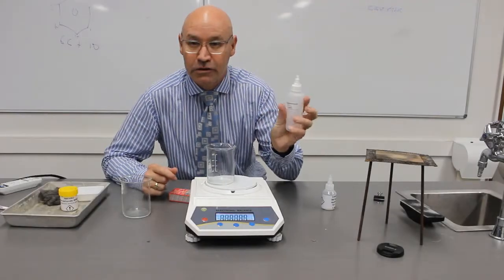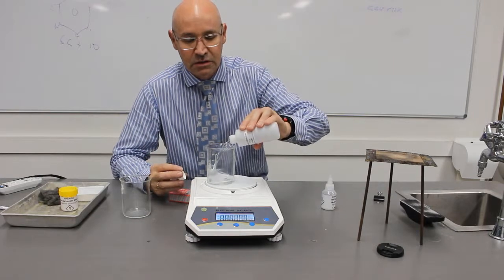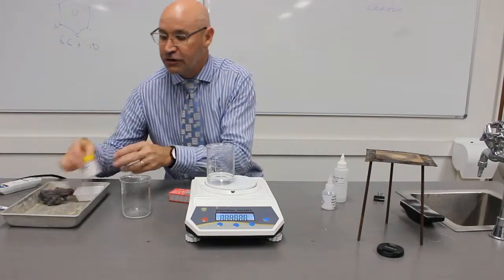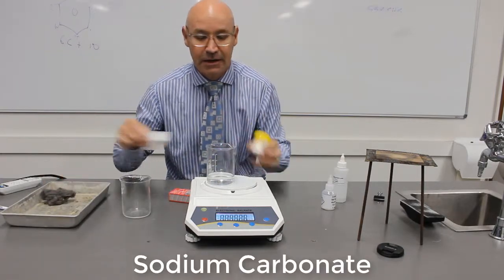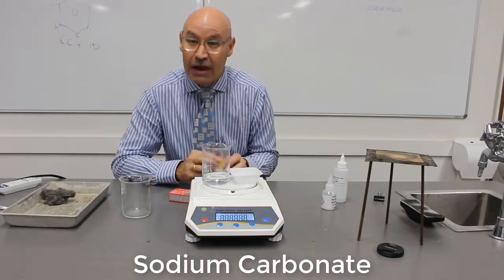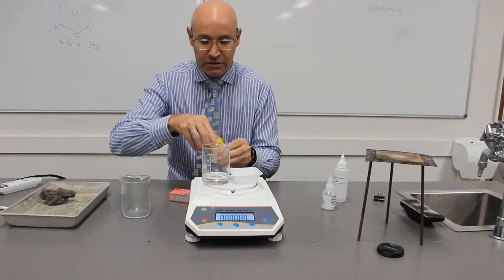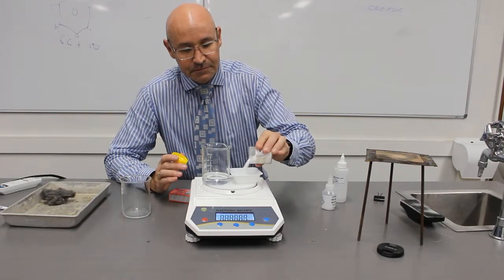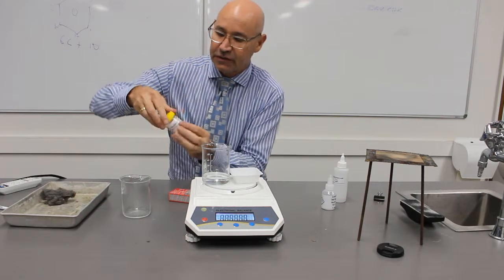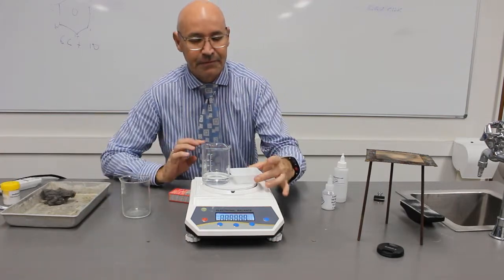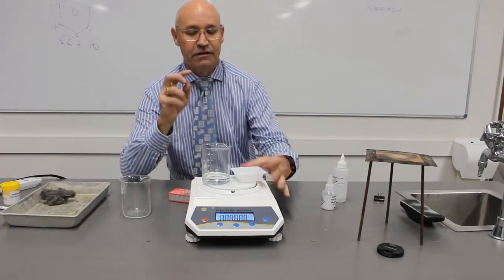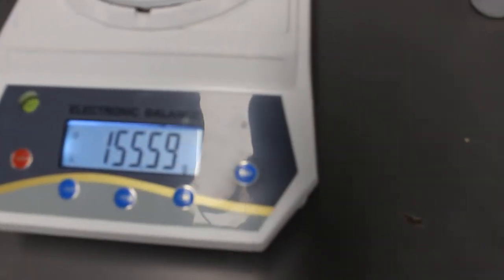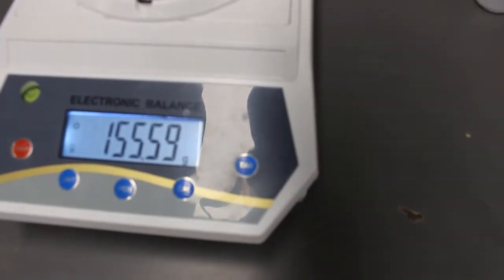In this next experiment, we're going to use hydrochloric acid again. And this time, instead of using a base, we're going to use a carbonate, sodium carbonate. Again, I don't need to be exact with the measurement because we're just measuring the difference in mass. So this is sodium carbonate and hydrochloric acid. Let's get our starting mass. As you can see, our starting mass is 155.59 grams.